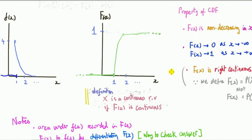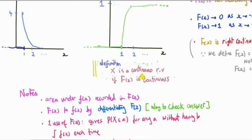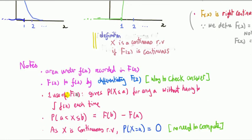By definition, X is a continuous random variable if its CDF is continuous — meaning you can draw the graph without lifting your pen from the paper, with no breaks anywhere. That's in contrast to a discrete random variable, whose CDF has jumps or breaks at every point in its support.